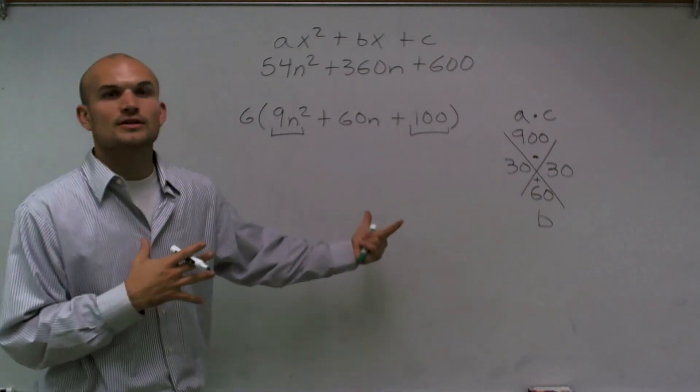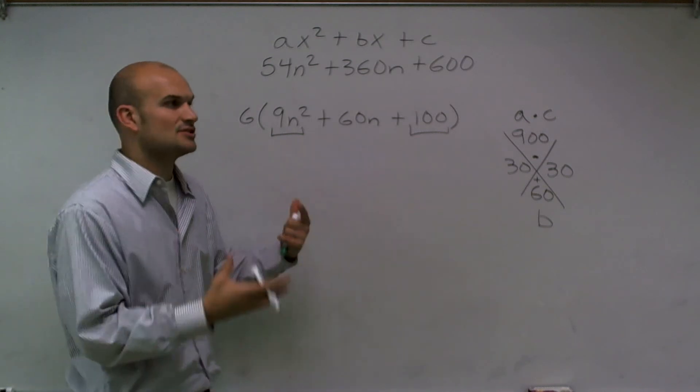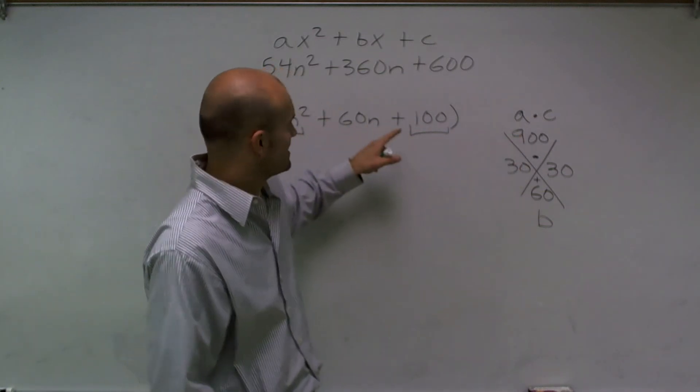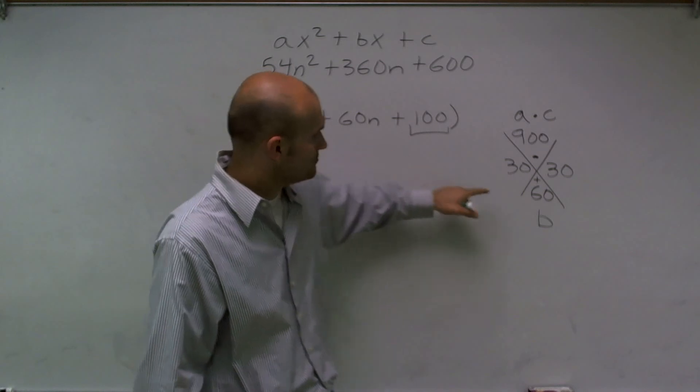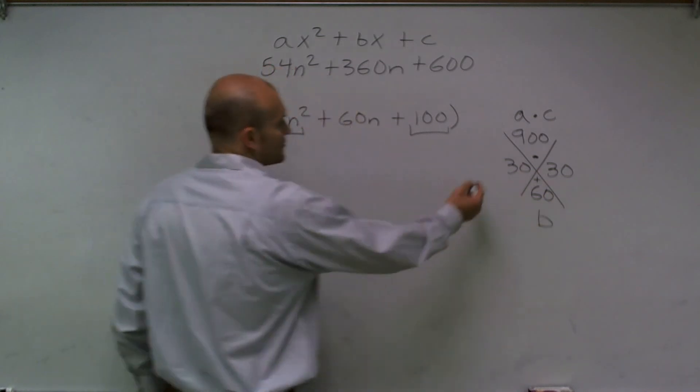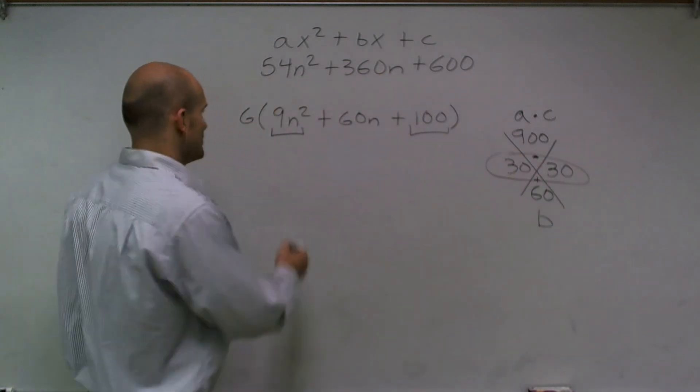But what I'll do is I'll show you the long way just so you guys can see so you have practice with it. So what we're going to do is since I notice that 900 is my a times my c, 30, 30, and 60, what I'm going to do is I'm going to rewrite now my middle terms that I just figured out.